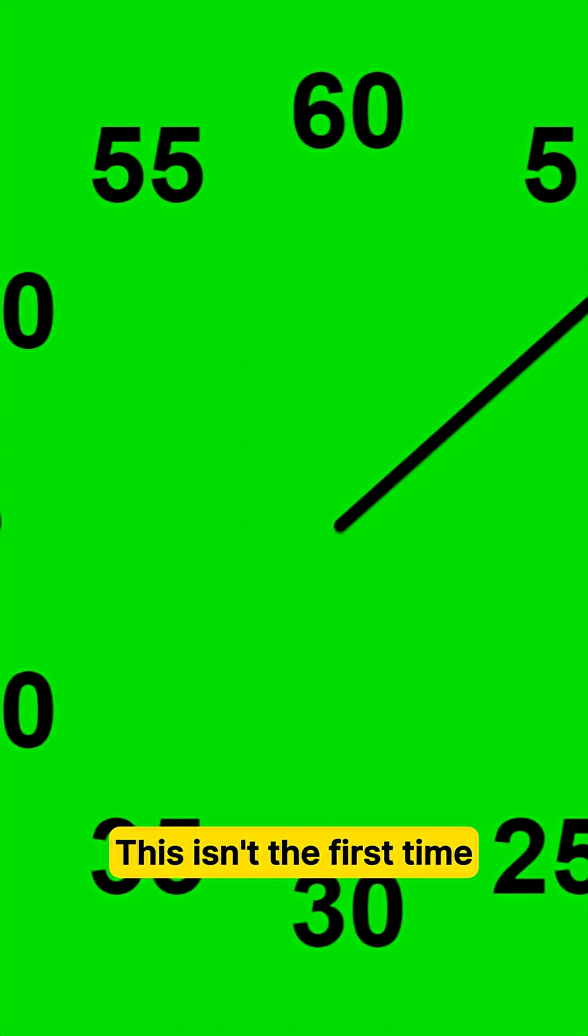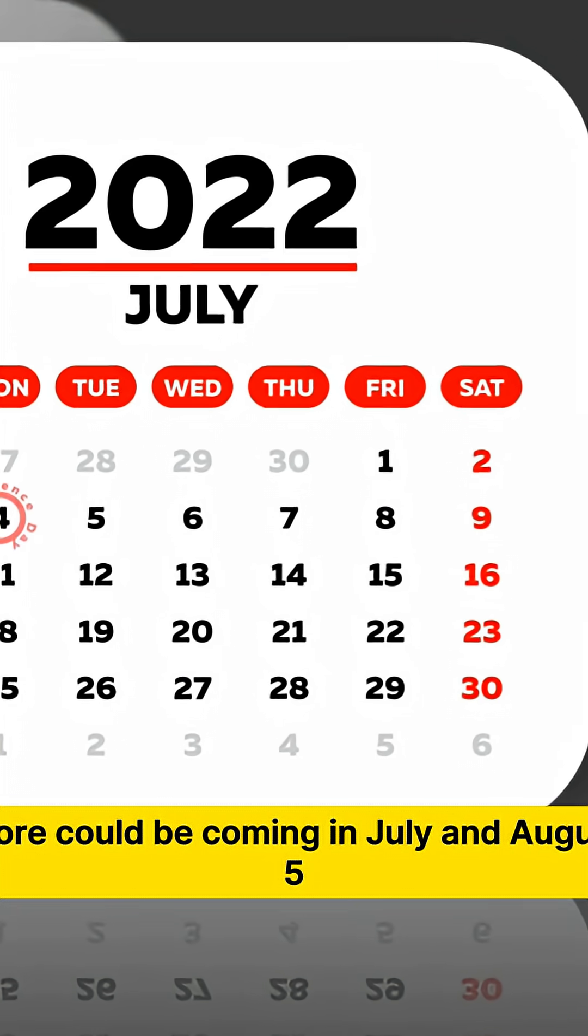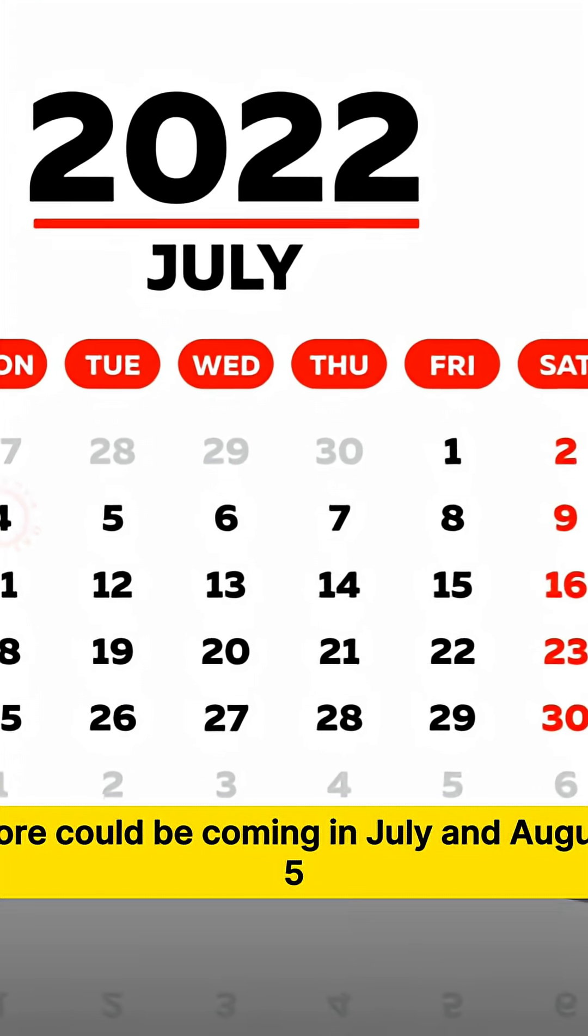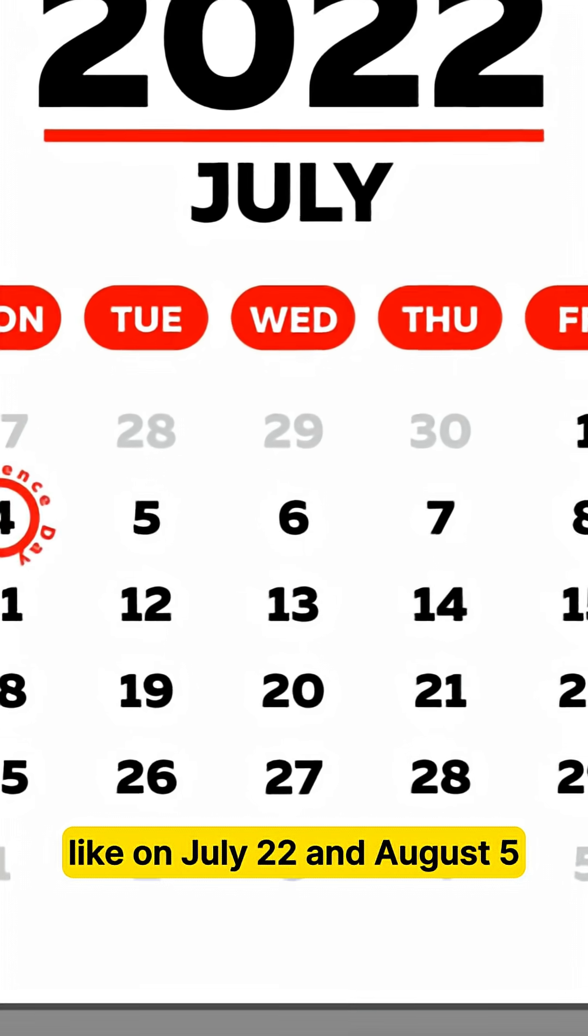This isn't the first time. In 2020, Earth had 28 record fast days, and more could be coming in July and August 2025, like on July 22nd and August 5th.